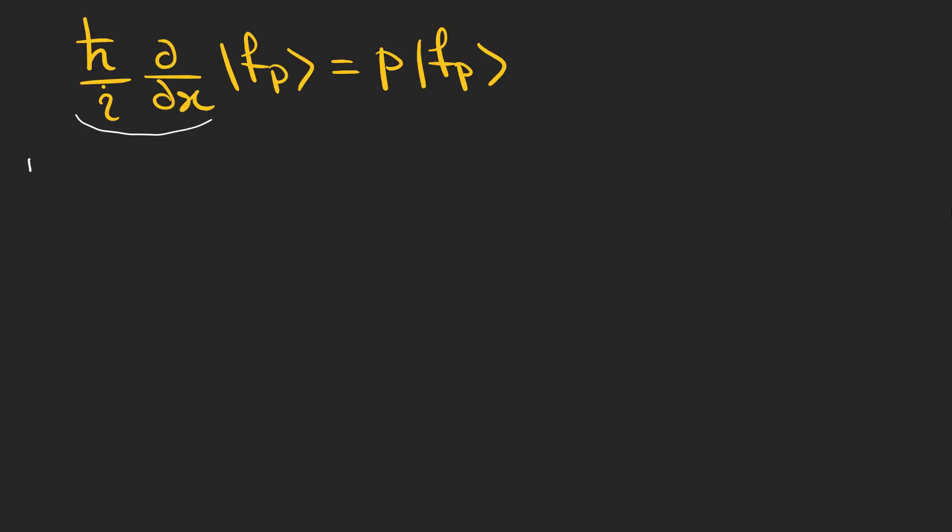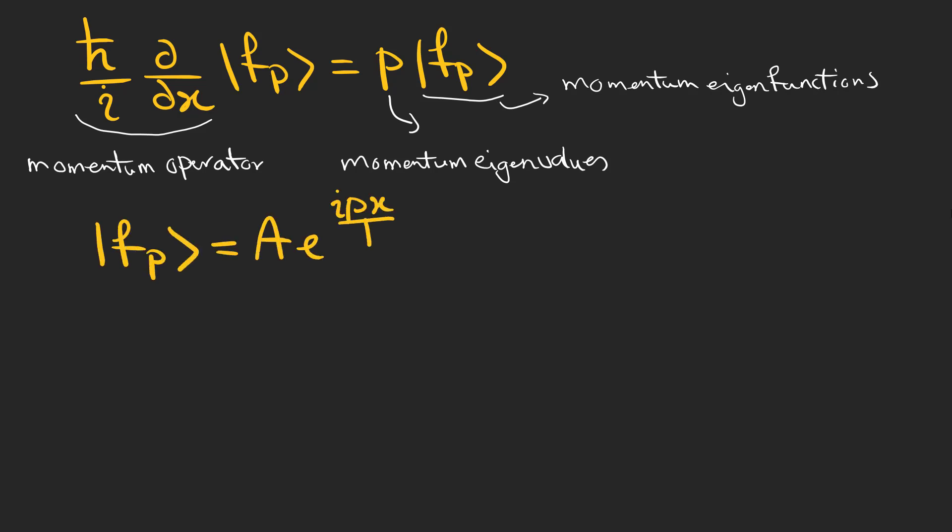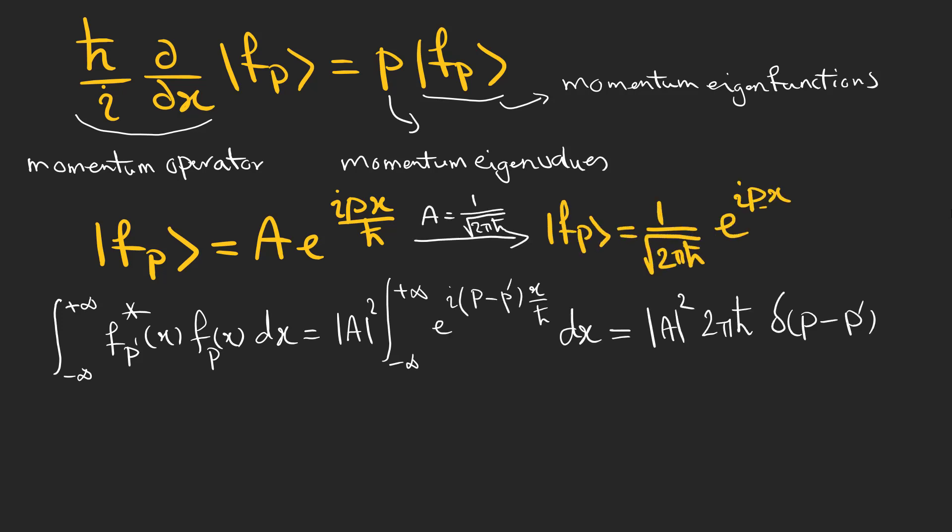Let's start with talking about the eigenvalues and eigenfunctions of the momentum operator. The general solution to this equation is not square integrable for any complex value of p, but if we restrict ourselves to real eigenvalues we can find a kind of orthonormality as you can see.